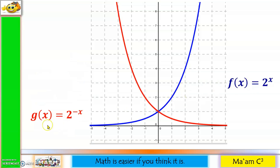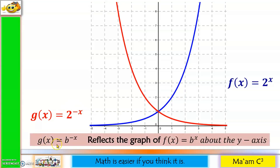What did you notice with my functions? The exponents. Here, our x is positive. Here, the x is negative. But it doesn't make any changes with our graphs. So what do you think is the effect of having a negative exponent? G of x equals b raised to negative x reflects the graph of f of x equals b raised to x about the y-axis. So there has been a reflection about the y-axis — that is the effect of having a negative exponent.